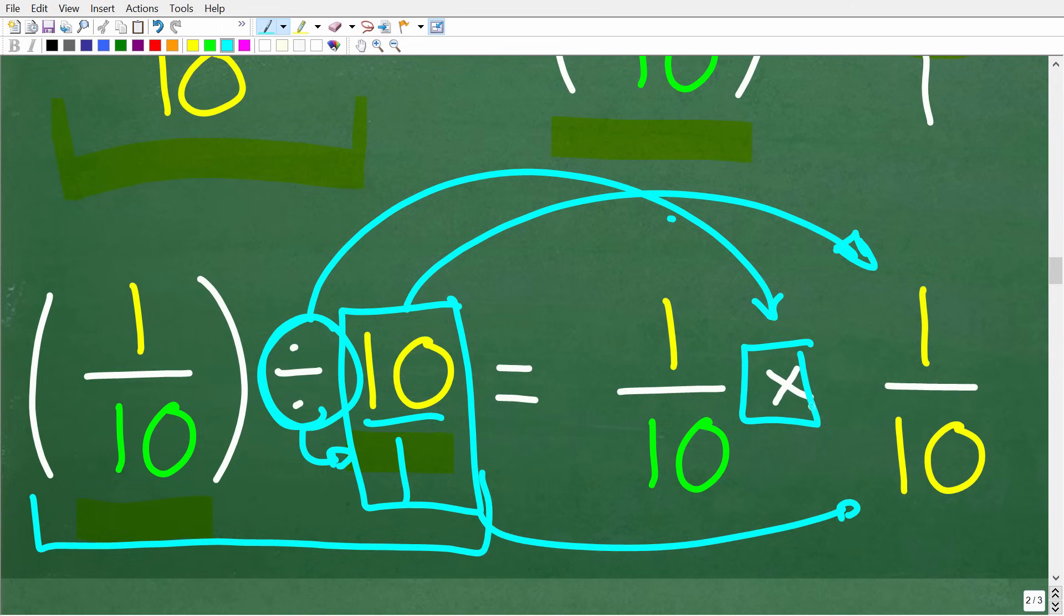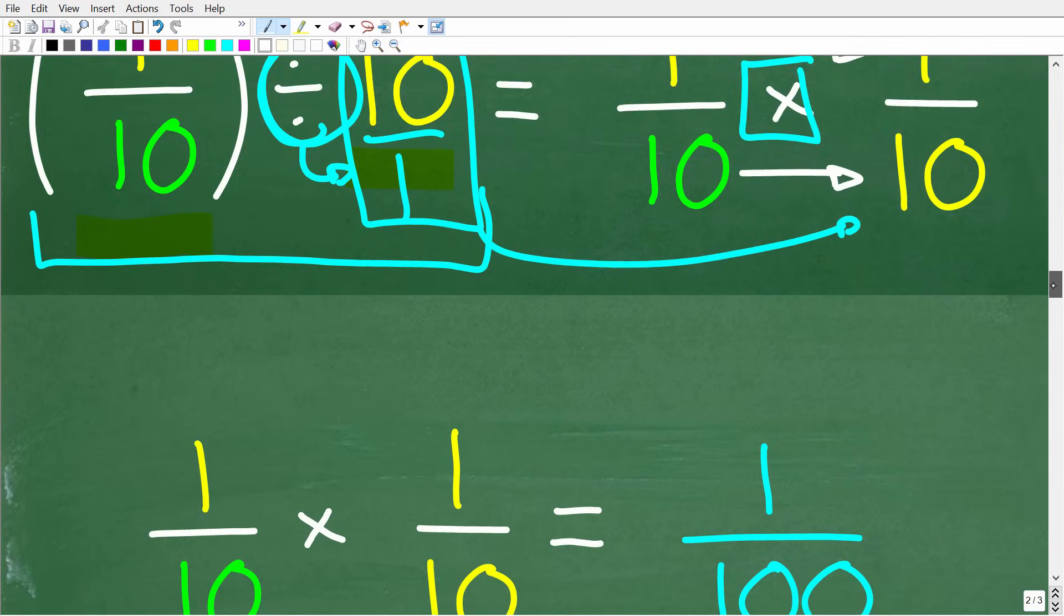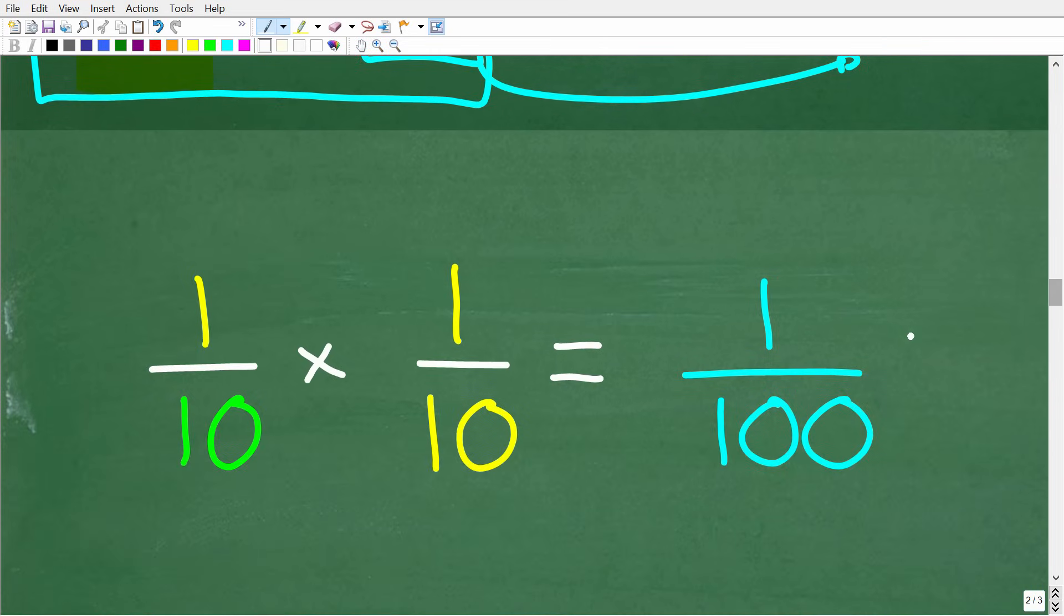All right, so now we have 1 tenth times 1 over 10. All we have to do now is multiply these fractions, which is very easy. Okay, so how do you multiply fractions? Just multiply the respective numerators and denominators. So 1 times 1 is 1, and 10 times 10 is 100. So the final answer here is 1 over 100.